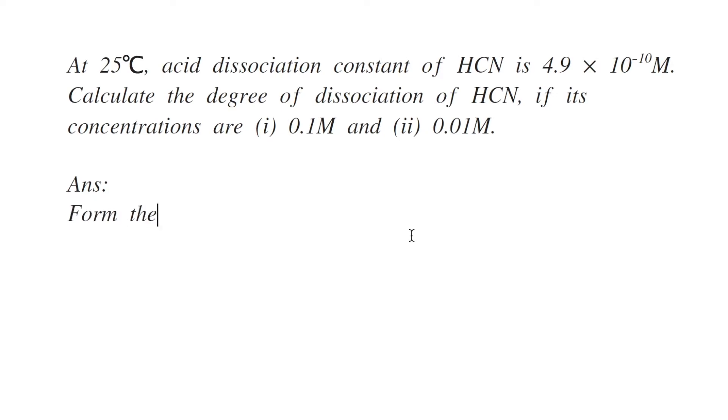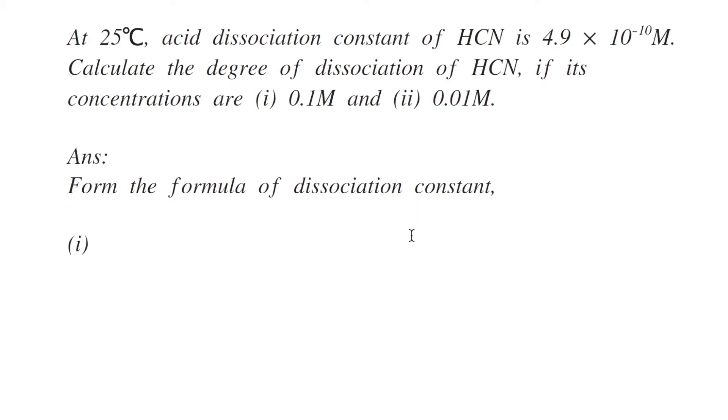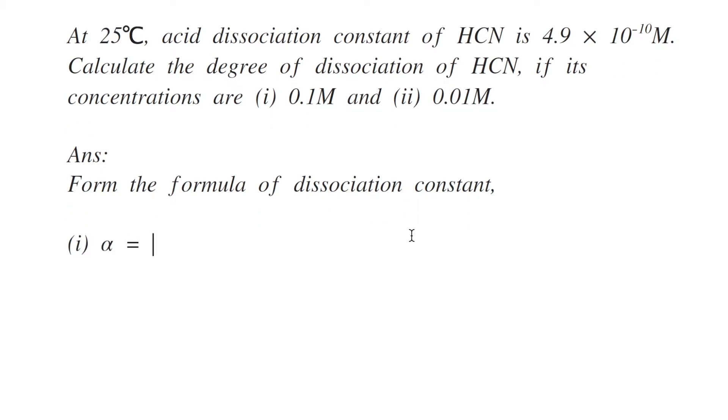First of all, the degree of dissociation is given by the formula: alpha equals square root of K dissociation divided by concentration C.